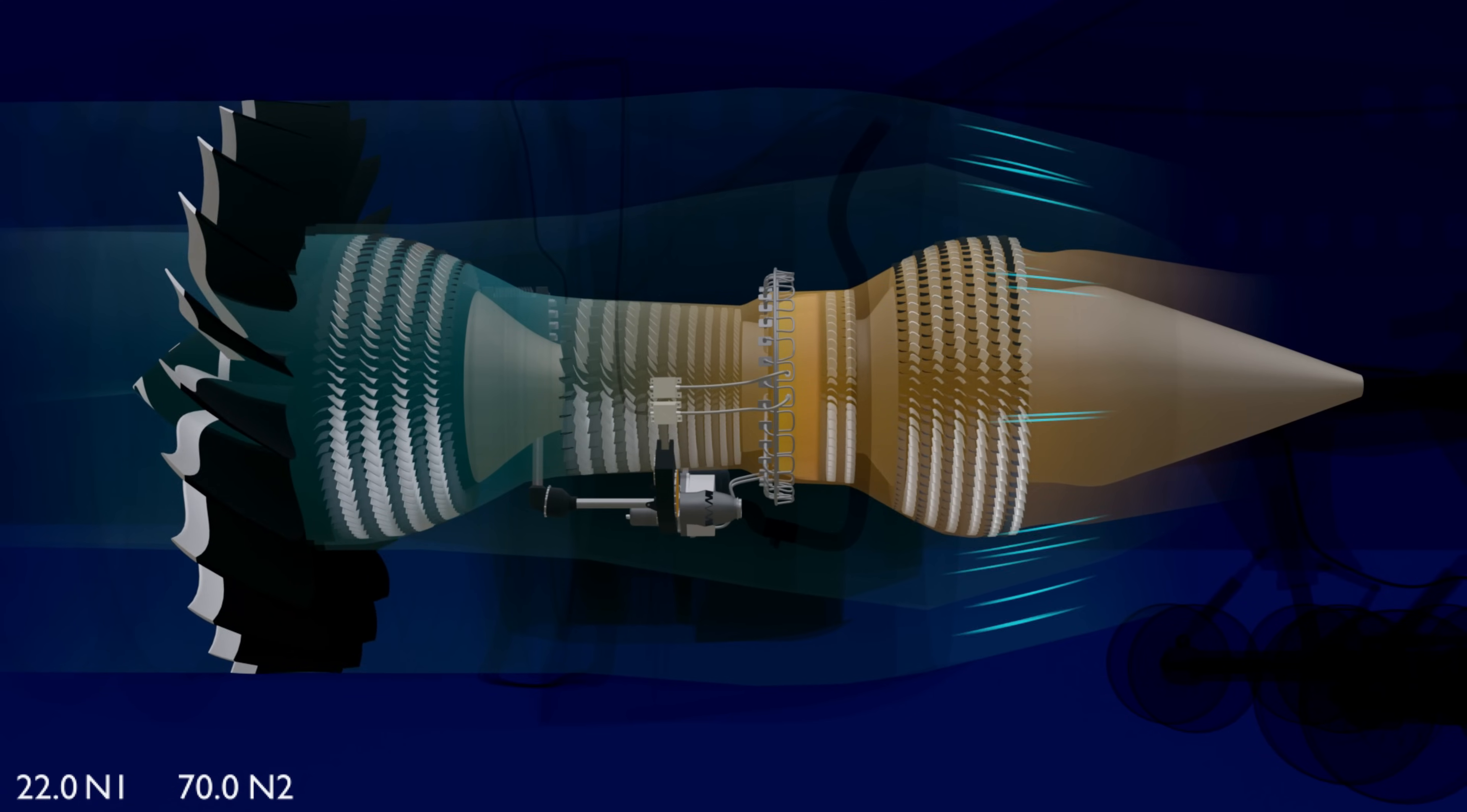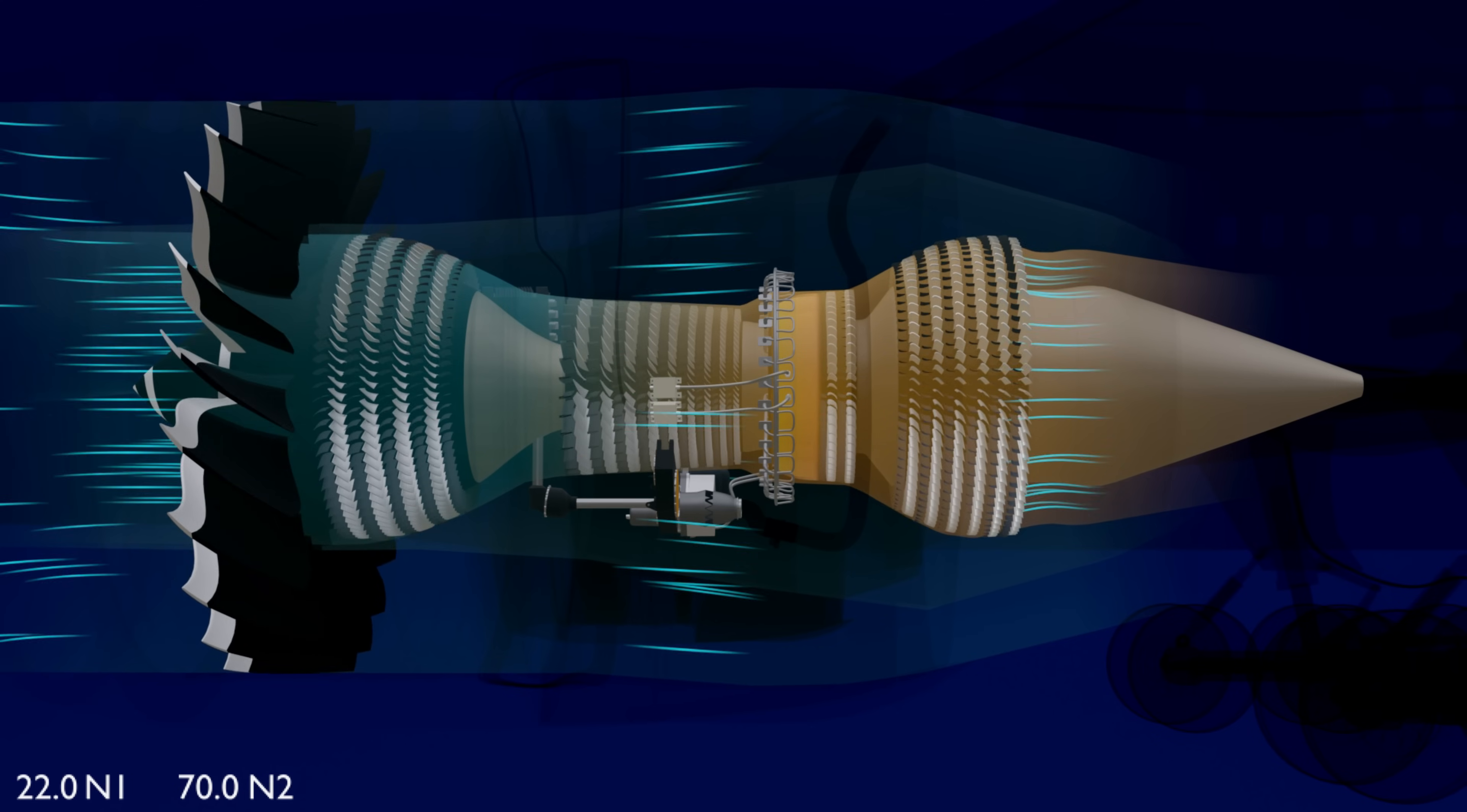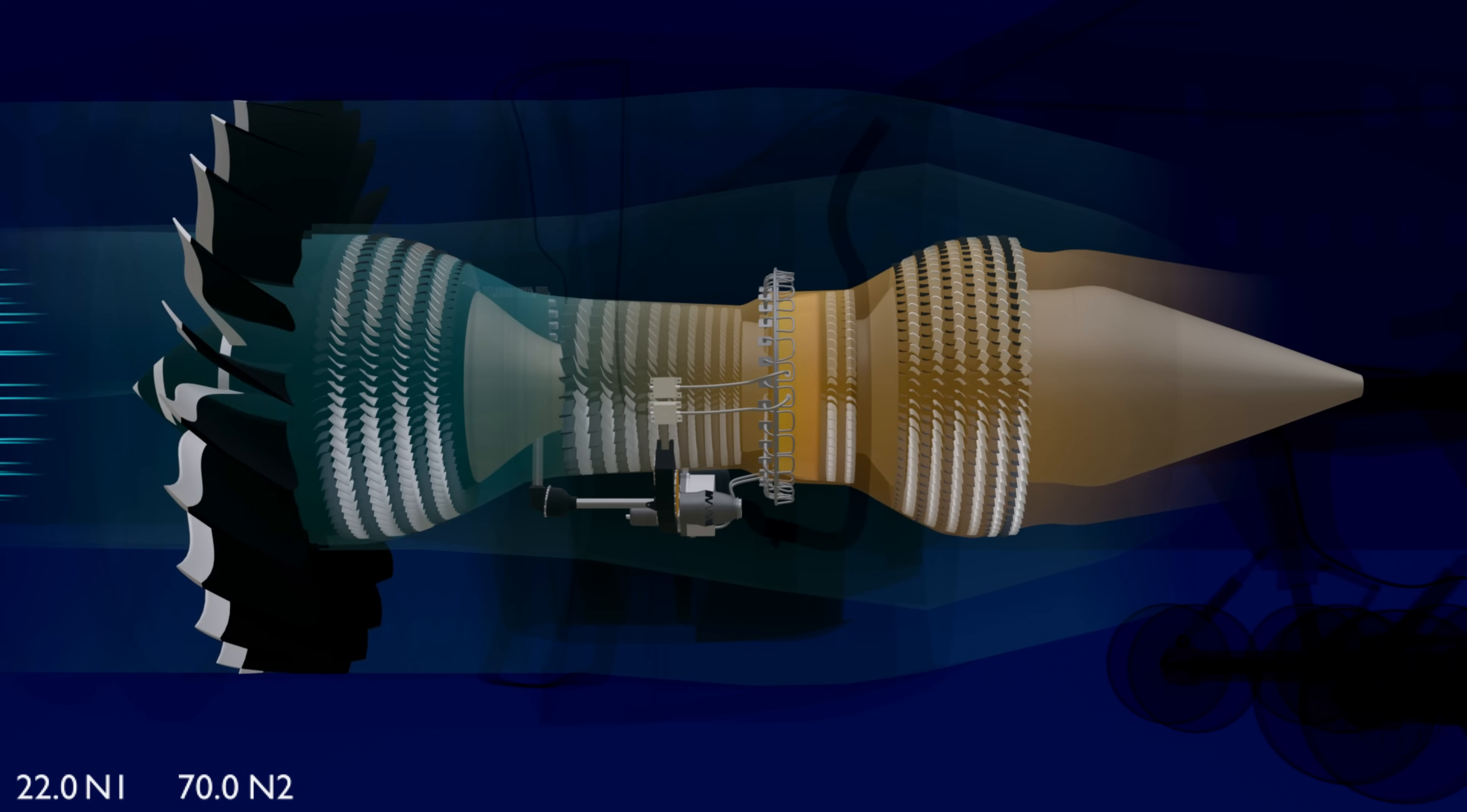In the first part of the 777 engine series, the engine was left running at idle power. The thrust of the engine from this point will be controlled by using the thrust lever.